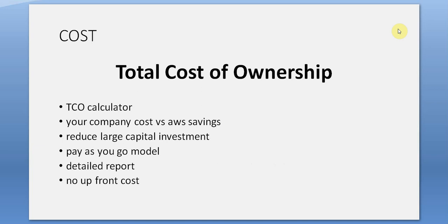Cost — Total Cost of Ownership: the TCO calculator allows you to calculate your company's costs versus using AWS, and it tells you your savings.